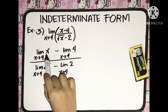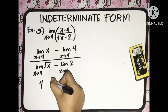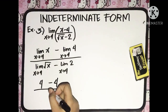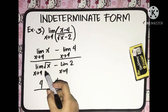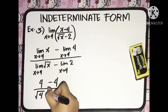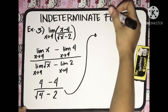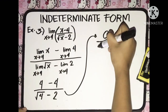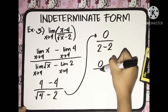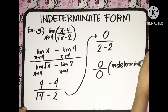Solving this: in the numerator, the limit of x as x approaches 4 is 4, minus the constant 4. In the denominator, the limit of the square root of x as x approaches 4 is the square root of 4, minus the constant 2. Simplifying: 4 minus 4 is 0. The square root of 4 is 2, minus 2 is also 0. So we have 0 over 0 — an indeterminate form. Let's try another solution.